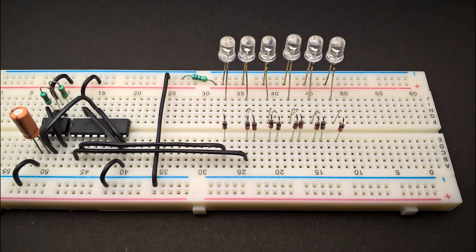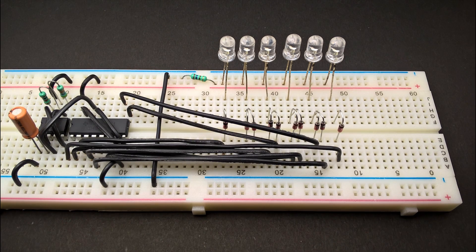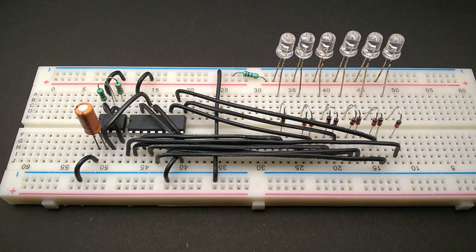Now I have connected the outputs of 4017 IC to each of the P terminals of the diodes as per the circuit diagram. Connect the power supply and here you go, the Knight Rider circuit.